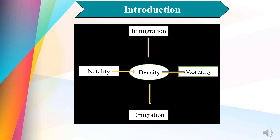The four population parameters that affect the density are natality, mortality, emigration and immigration. Population density may also change with seasons, weather conditions and food supply and with many other influences. In an area there is an upper limit to the population density which is imposed by the size of the area and the trophic structure. The population density gives us information about the magnitude of the population but does not provide any information about the distribution pattern of the population within an environment.